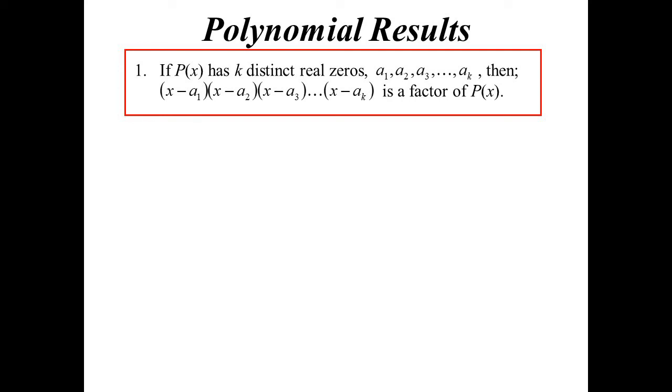So therefore we know that x minus a1 is a factor, so is x minus a2, so is x minus a3. So then logically, what we get when we multiply all those factors together must be a factor. That's basically what this is saying.